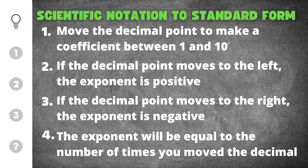We have four important things that we need to remember when writing numbers in scientific notation. The first step is that we have to move the decimal point to make a coefficient between the numbers 1 and 10.